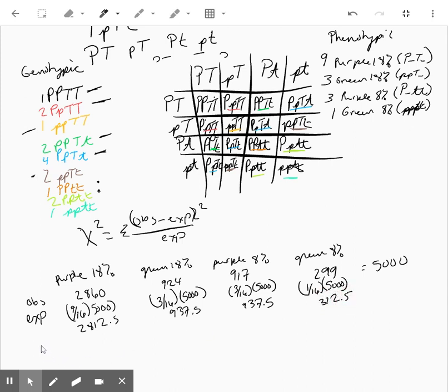Then you're going to subtract your observed minus expected. So you're going to subtract this minus this. And that should get you 47.5 minus 13.5 minus 20.5 and minus 13.5.